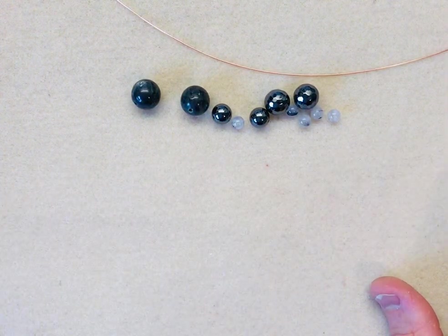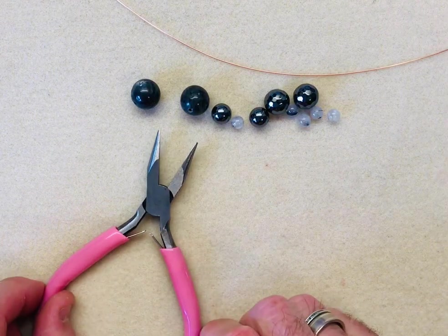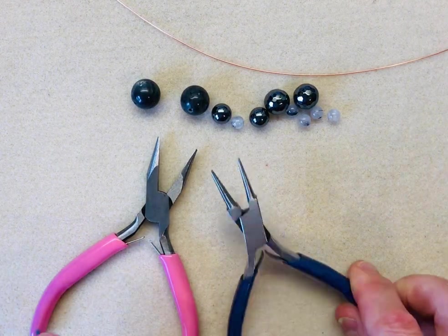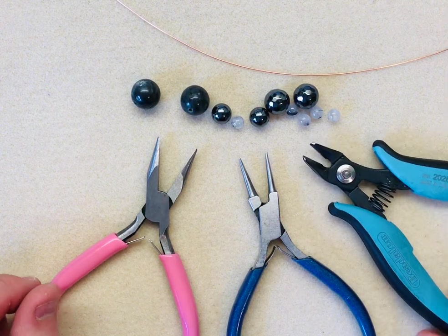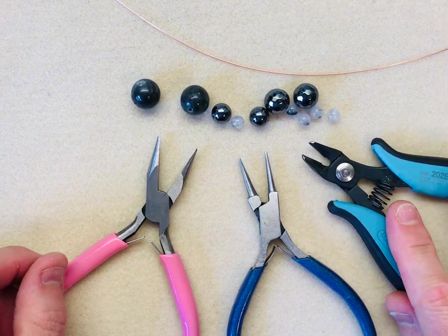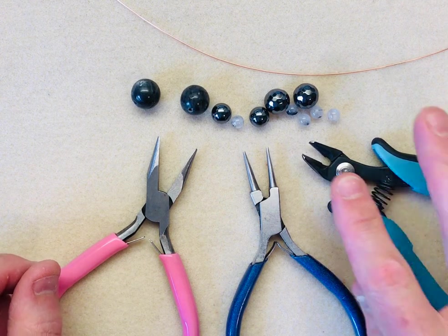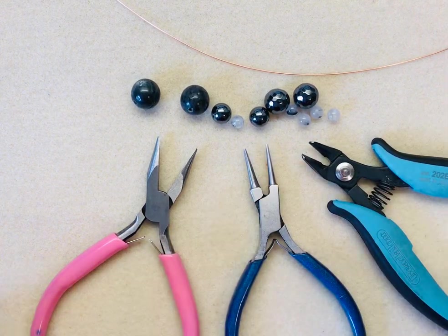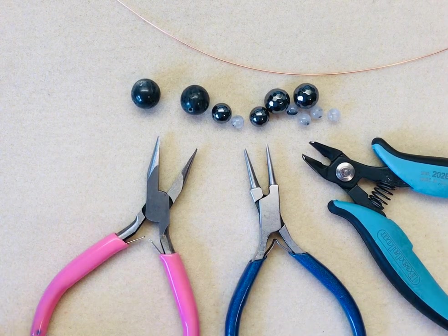And you only basically need three types of tools. You need your flat nose pliers, you need round nose pliers and flush cutters. If you only have your basic wire cutters that's absolutely fine. The reason I use flush cutters is because it's got a very fine point and you can get right in to cut away your excess wires. So let's make a start.